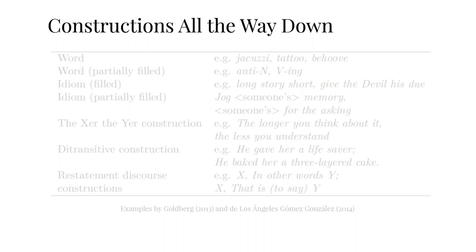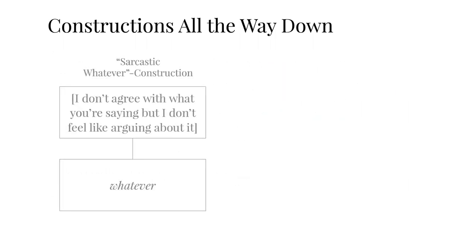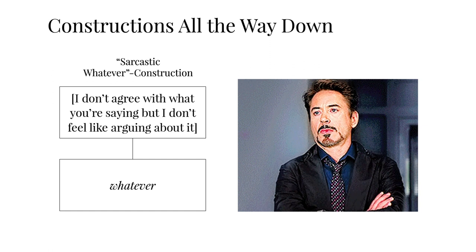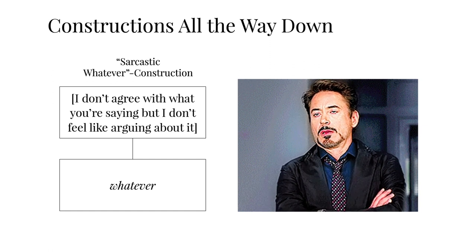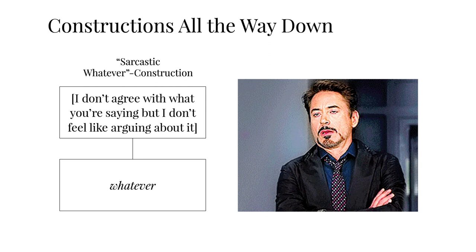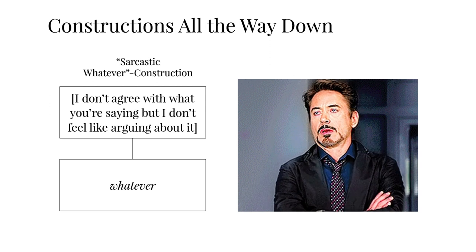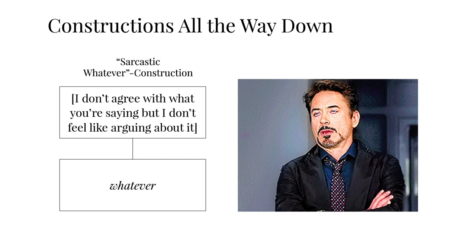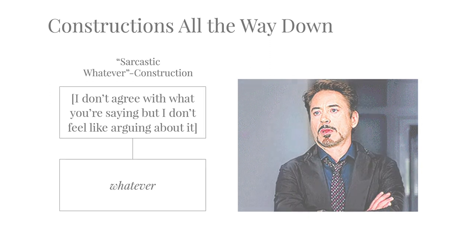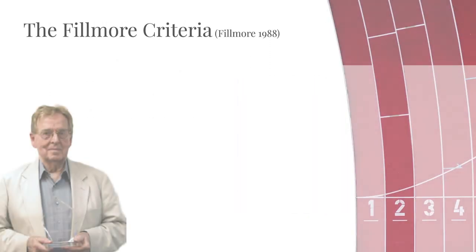It is very important that the construction doesn't require its meaning and its form part to resemble each other. For example, the form of the sarcastic whatever construction is very simple and consists of only one word, typically accompanied by gestures such as eye-rolling and a particular intonation. Its meaning, however, is quite complex: it means that your interlocutor does not agree with you and is even annoyed by what you said, but they don't feel like arguing about it and want to move on to something different.